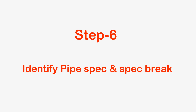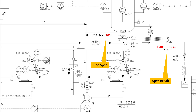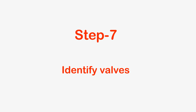Step 6: Identify Pipe Spec and Spec Break. This is a very important step for a piping design engineer — to identify the piping material specification of the line and to identify where the material is changing at the spec break.